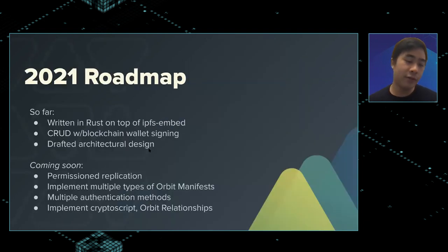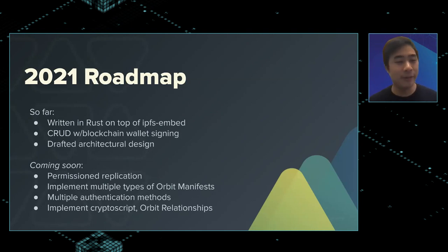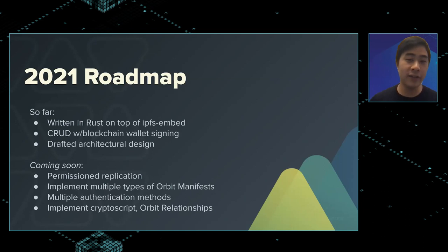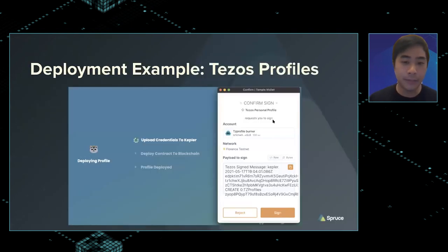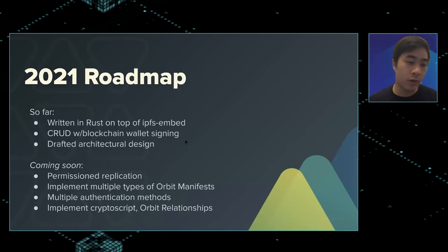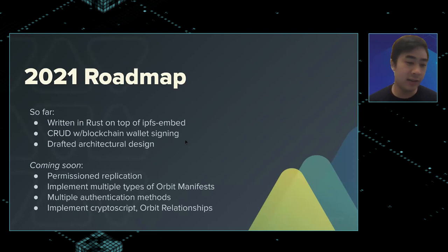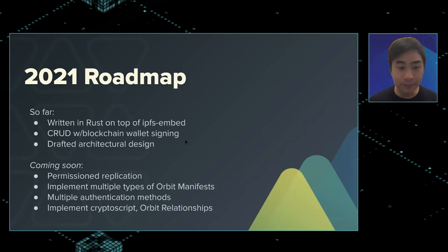That's a bit about orbits. This project didn't exist a month or two ago and we've made a lot of headway. It's built in Rust on top of IPFS embed — great to use as a modular toolkit. IPFS-rs also looks great and they seem compatible. We have CRUD — create, read, update, delete — with blockchain wallet signing. Working now on permission replication to multiple instances, multiple types of orbit manifests, multiple authentication methods including YubiKey support, and implementing CryptoScript and these orbit relationships.